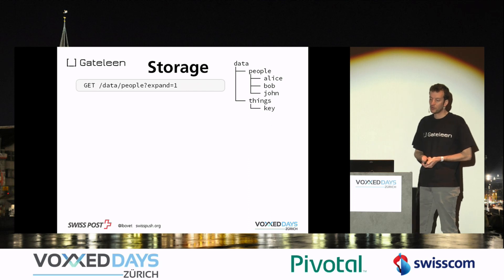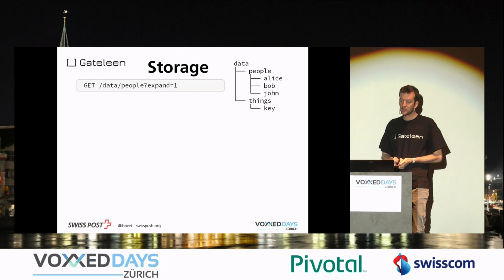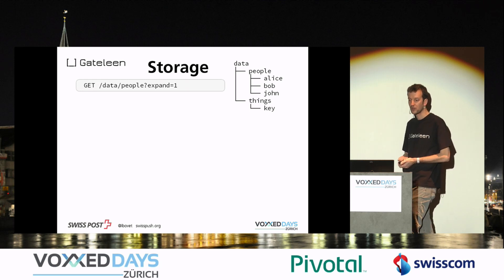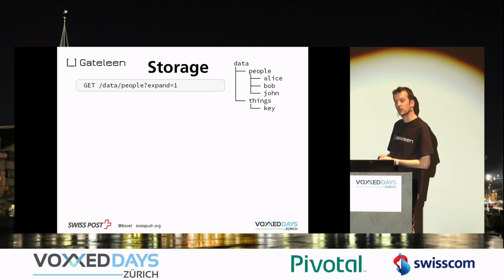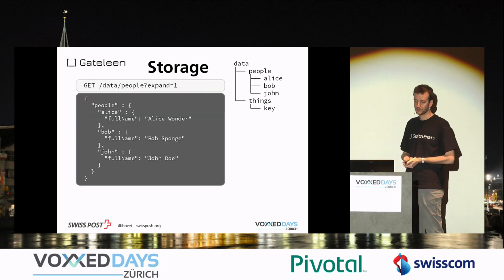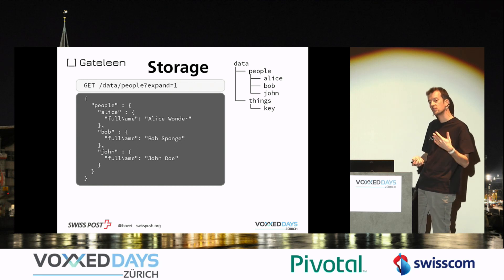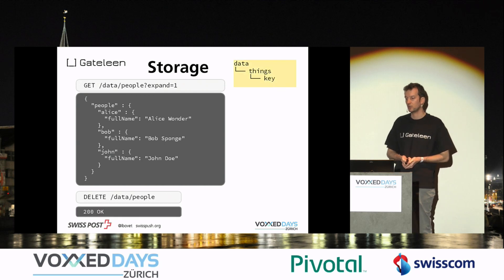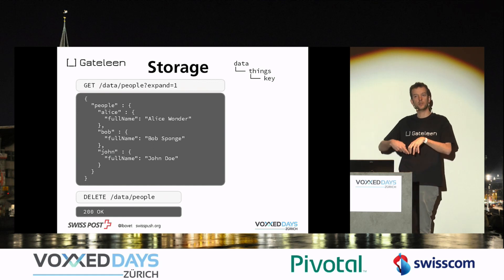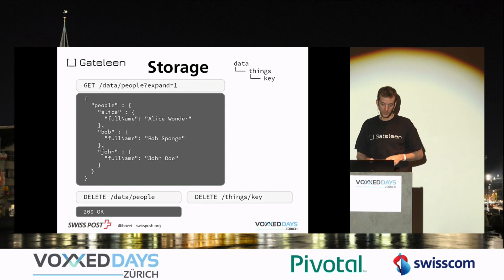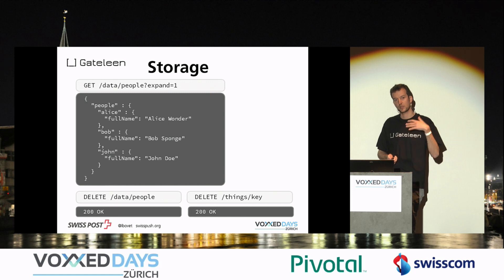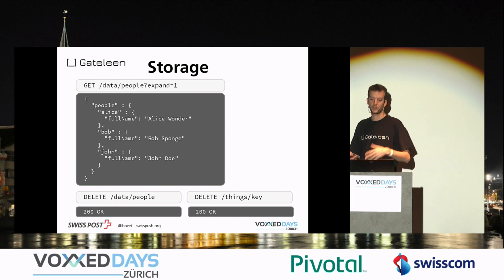An interesting thing about the storage is that these collections can be expanded. With the parameter expand=1, you don't only get the list of sub-resource names — you also get their content. This avoids having to make multiple requests to retrieve all your data. Delete is cascading: if you delete people, it deletes everything underneath. Collections cannot be empty — they are created dynamically and if you delete all items, the storage is cleared. We also have expiration capabilities: you can set a header to specify how long a resource should exist, and it will disappear automatically. This is very practical for temporary data to deliver to devices.